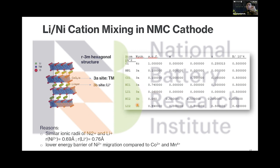In the lithium layer, nickel is present in the same proportion, creating a swap. The reason is the lower energy barrier for Ni²⁺ migration compared to cobalt and manganese, so only nickel can migrate into the lithium layer — cobalt and manganese cannot.